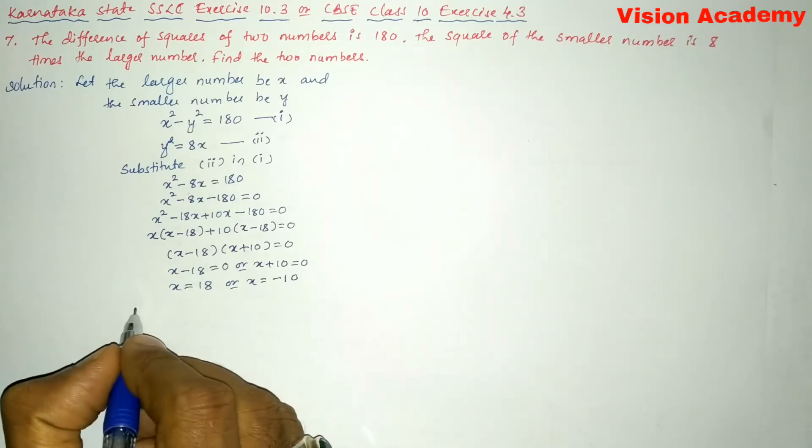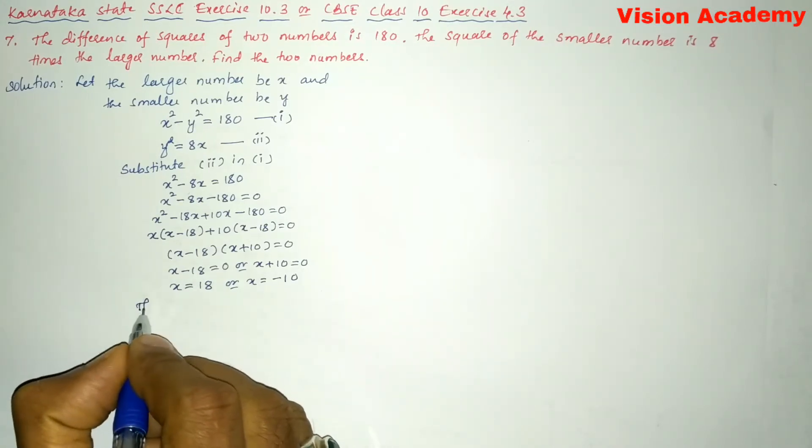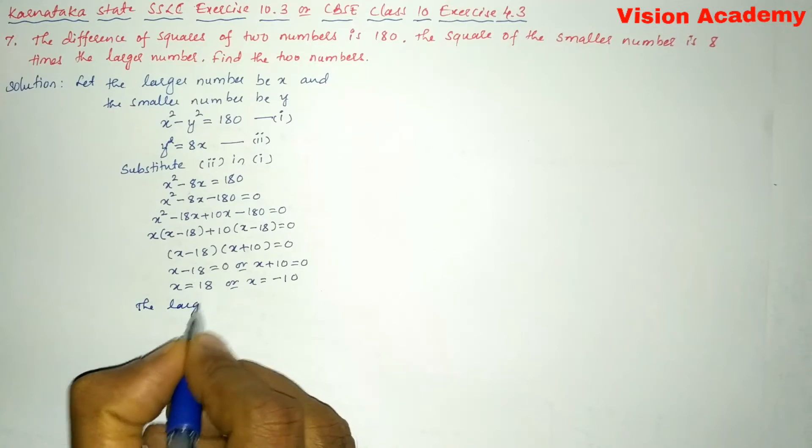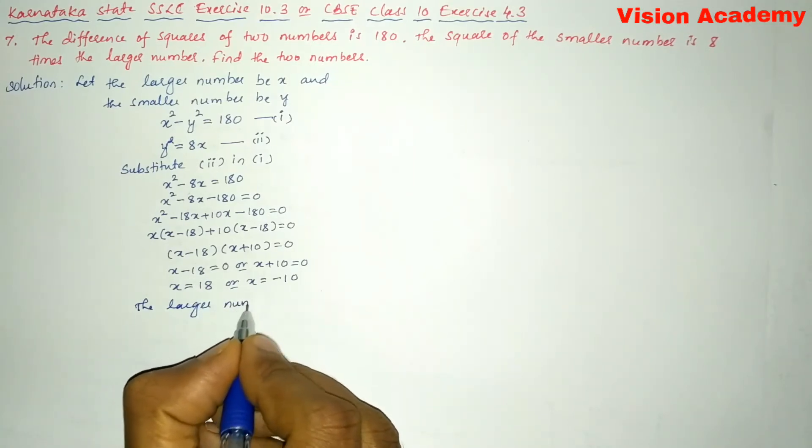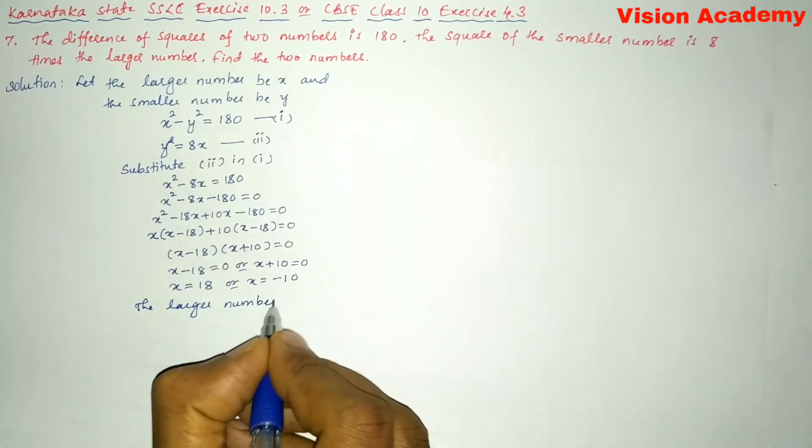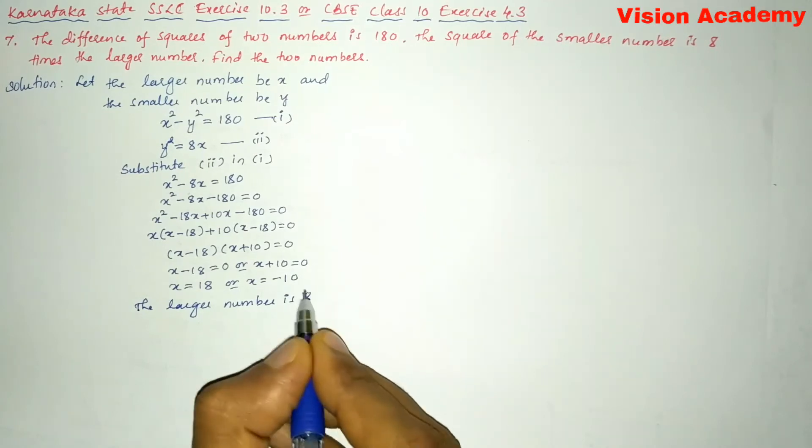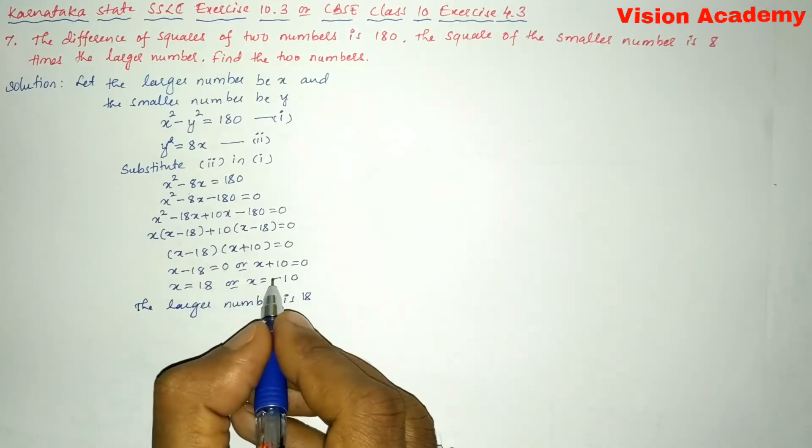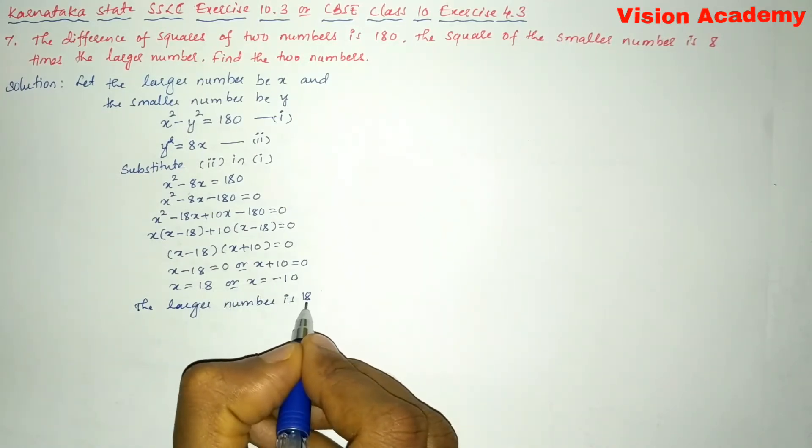So here we can write the larger number is 18 because we are going to take only positive value not negative values. So 18 is x.